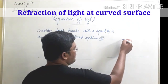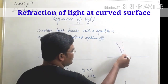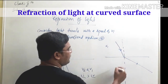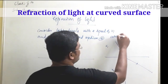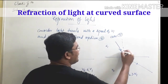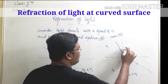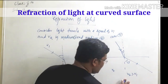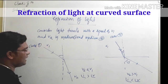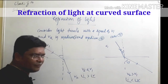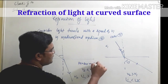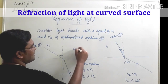In Case 2, velocity V2 is greater than V1, and when we measure the angle of incidence and refraction with respect to the normal, angle i is less than angle r. In Case 1 where V2 is less than V1, that medium is termed the denser medium, and the other is the rarer medium. In Case 2, where V2 is greater than V1, the first medium becomes the rarer medium and the second becomes the denser medium.